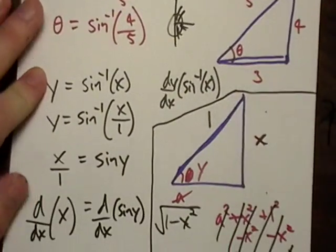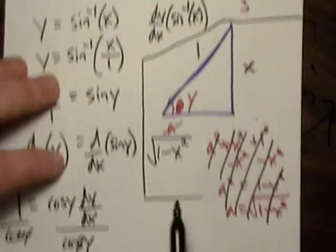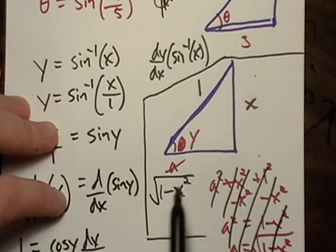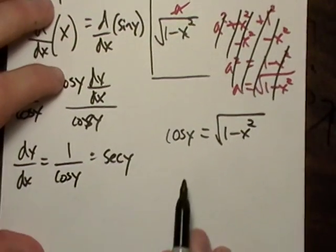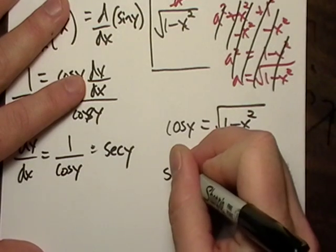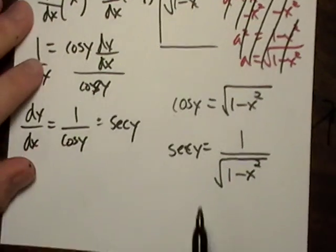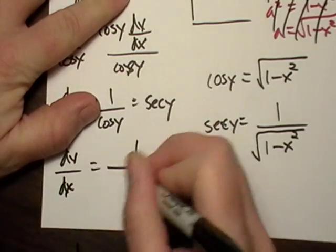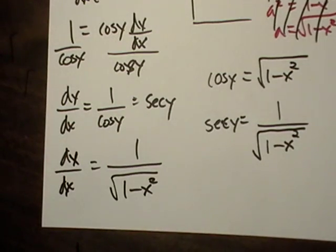So derivative of y with respect to x is secant y. Let's go back over here, and cosine of y is adjacent over hypotenuse. So cosine of y will be √(1 - x²) over 1, which is just √(1 - x²). So that's what cosine of y is going to be equal to. So secant y is just the reciprocal of that. So it looks like the derivative of y with respect to x is going to be 1 over √(1 - x²).